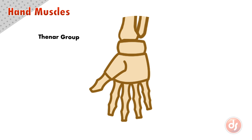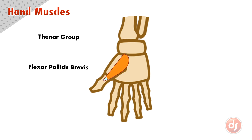The thenar eminence is made up of two muscles. The first is the flexor pollicis brevis. It originates on the carpal mass just below the thumb, and inserts into the side of the thumb at the first phalange. The second muscle is the abductor pollicis brevis. It originates on the carpal mass, more to the outside of the flexor pollicis brevis. It inserts into the side of the thumb at the first phalange, next to the flexor pollicis brevis insertion.